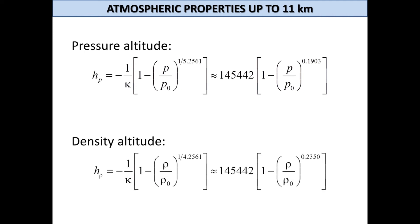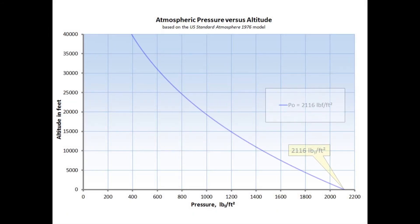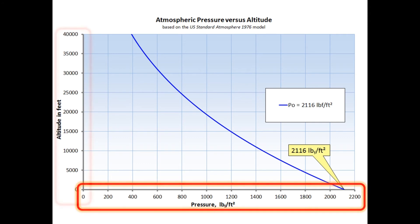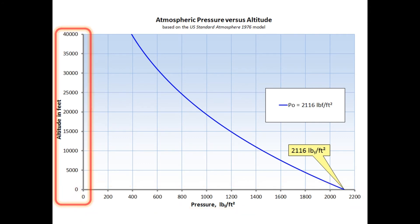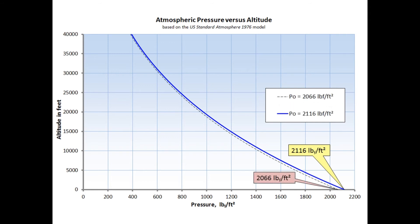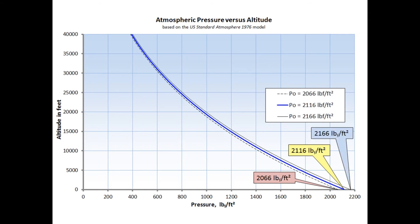Applying this approach to the density equation allows density altitude to be determined as well. To further our understanding, let's plot the standard day pressure from sea level to 40,000 feet, with pressure on the horizontal axis and altitude on the vertical axis. Now, what happens if the sea level pressure at our location is not 2,116 pounds pressure but something else? If it is 50 pounds less, or 2,066 pounds pressure, we can plot this as well — effectively shifting the baseline curve to the left. Similarly, on a day when the sea level pressure is 50 pounds greater, or 2,166 pounds pressure, the baseline curve is shifted to the right.